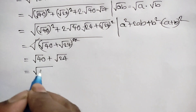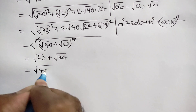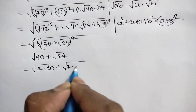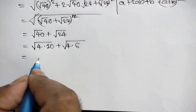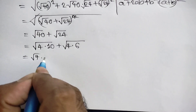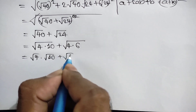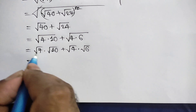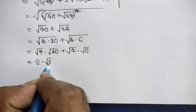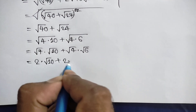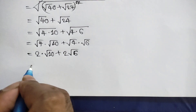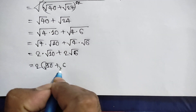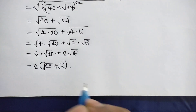Now square root of 40 can be written as square root of 4 times 10, and square root of 24 can be written as square root of 4 times 6. So we get 2 times square root of 10 plus 2 times square root of 6. Taking out the common factor 2, our final answer is 2 times (square root of 10 plus square root of 6).